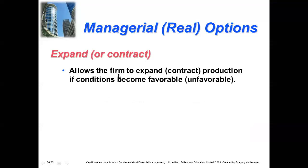The first option is expand or contract, which allows the firm to expand or contract production depending on whether conditions become favorable or unfavorable. This is a qualitative option — do you expand the project or contract the project? Depending on what circumstances are in your favor or become unfavorable, you have to decide one of the two options: expand or contract.